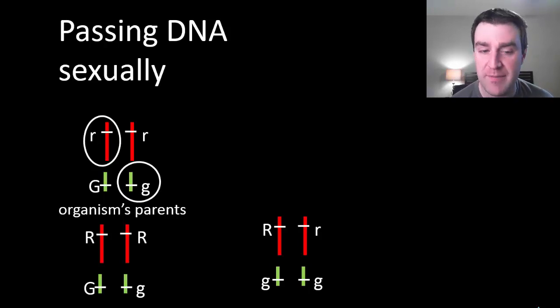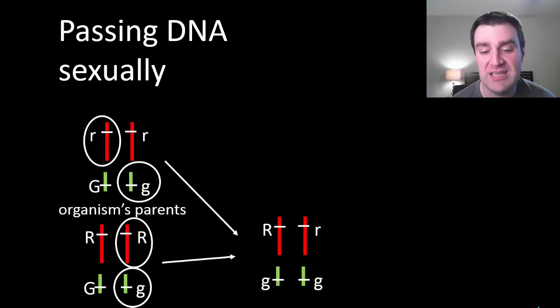Maybe this parent passed along those chromosomes, whereas the next parent passed along those chromosomes. And that's what led to our current organism. Now, what's really interesting to note is if those two parents produce another offspring, they could pass on a very different half of themselves.